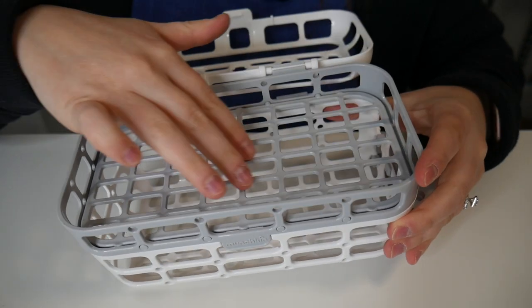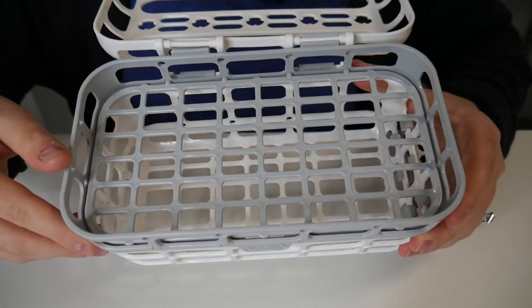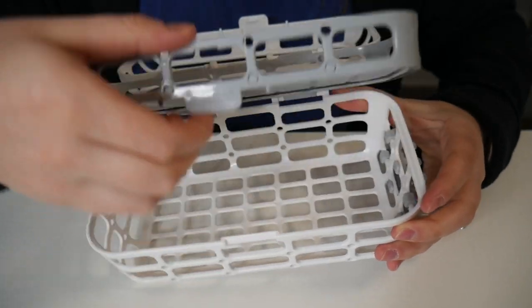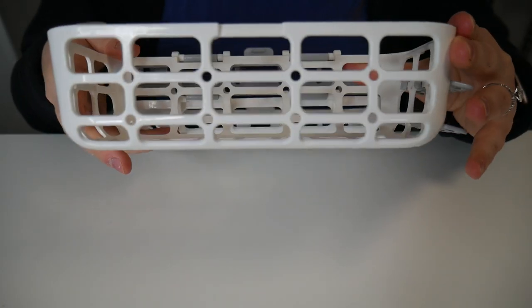You can see this design here has a second little layer for some smaller bottle pieces or accessories. As you open this up, there's a larger basket at the bottom to accommodate those taller bottle nipples or anything like that.